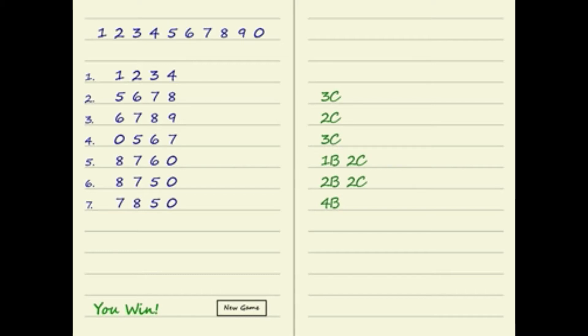They get hints called Bulls and Cows. If the matching digits are in their right positions they are called Bulls, and if they are in different positions they are called Cows.